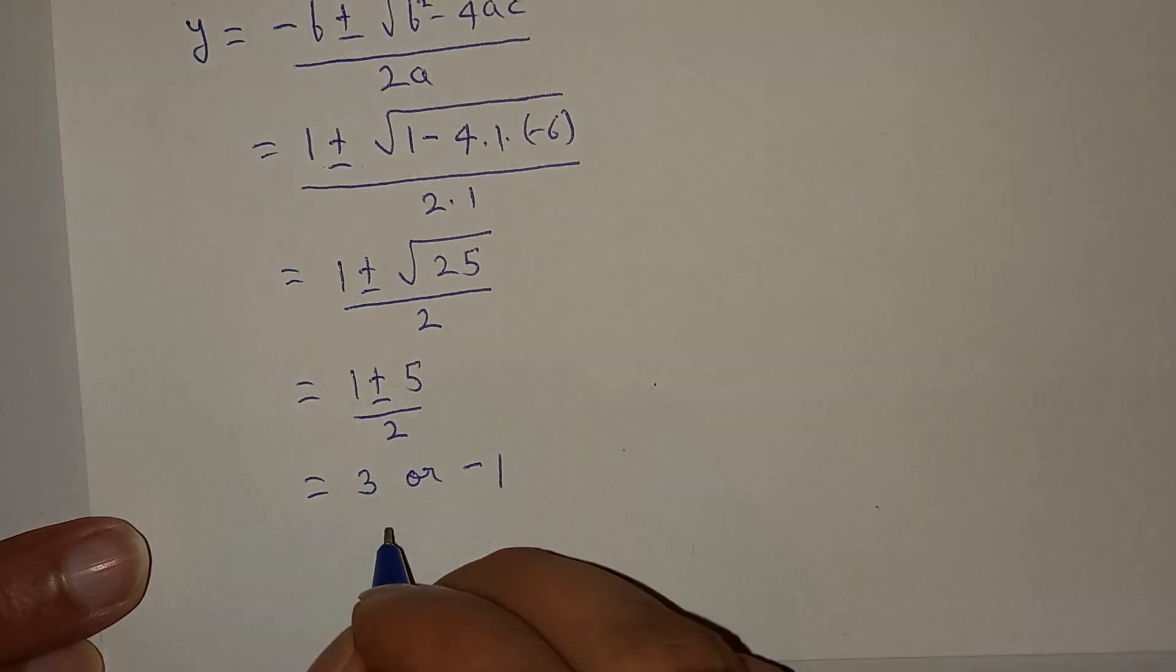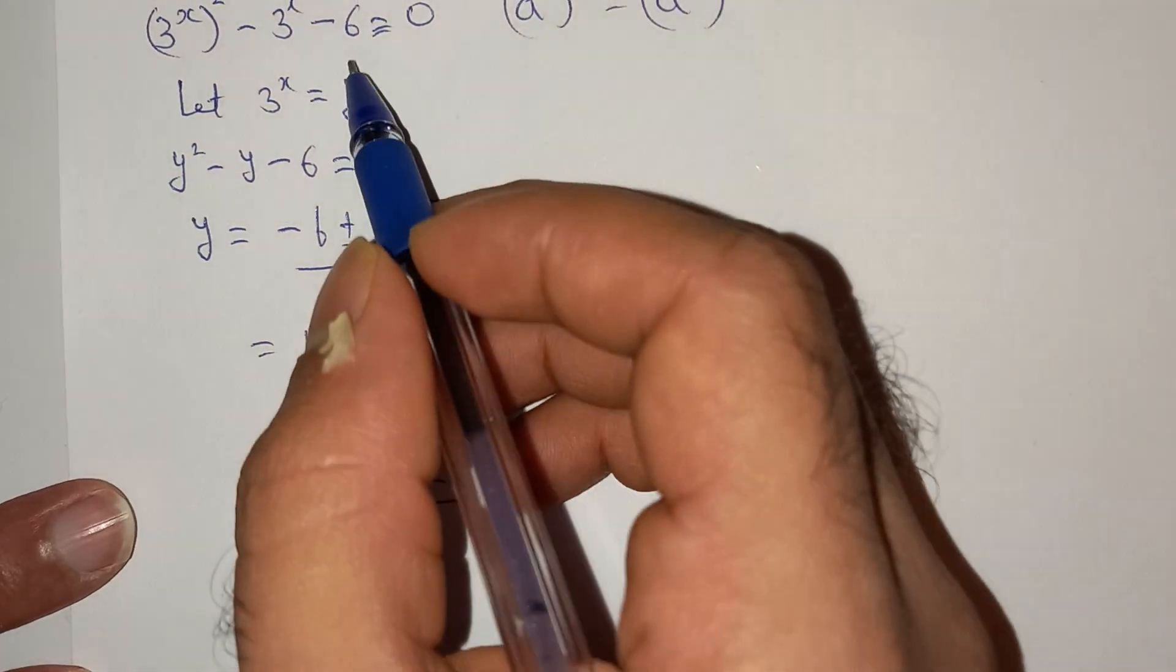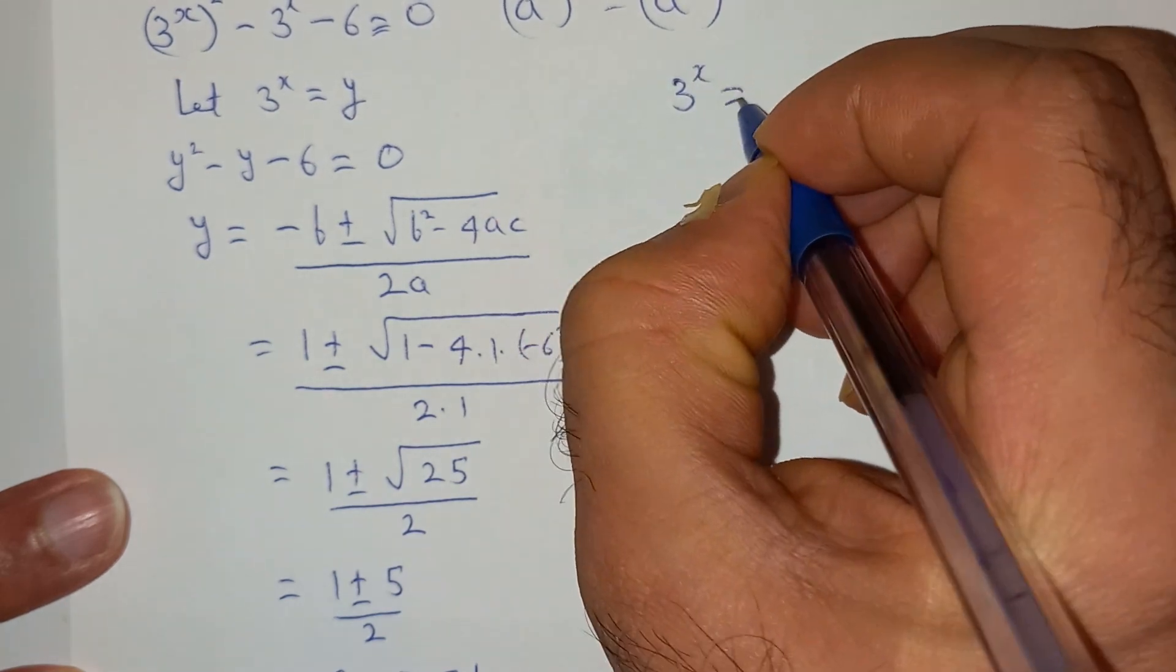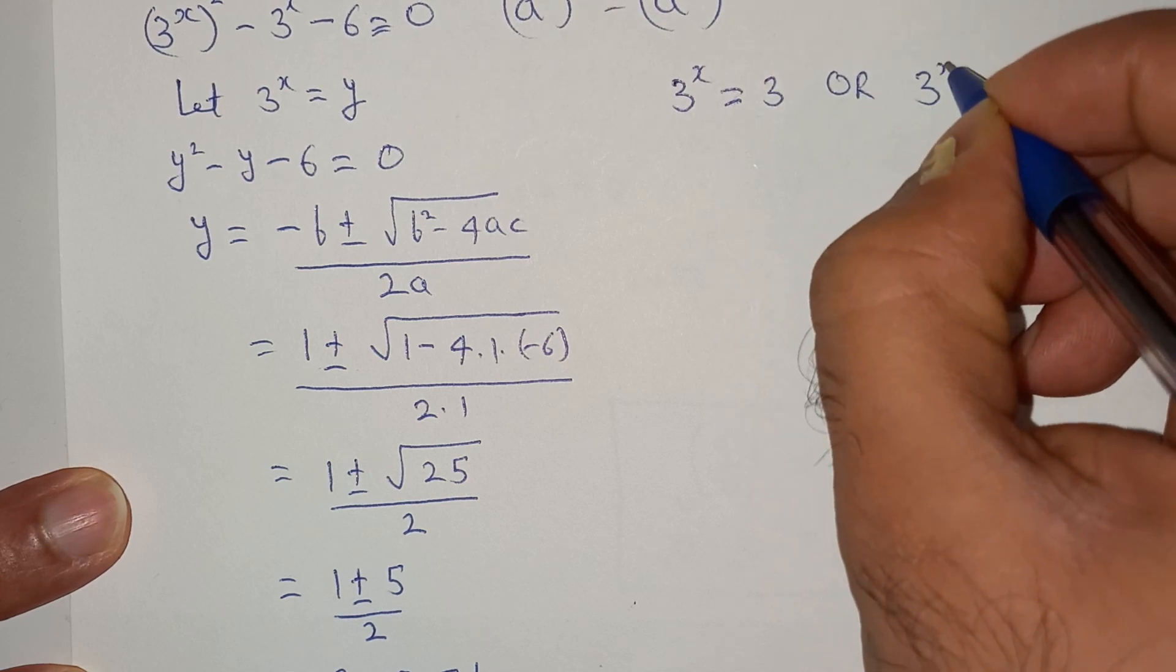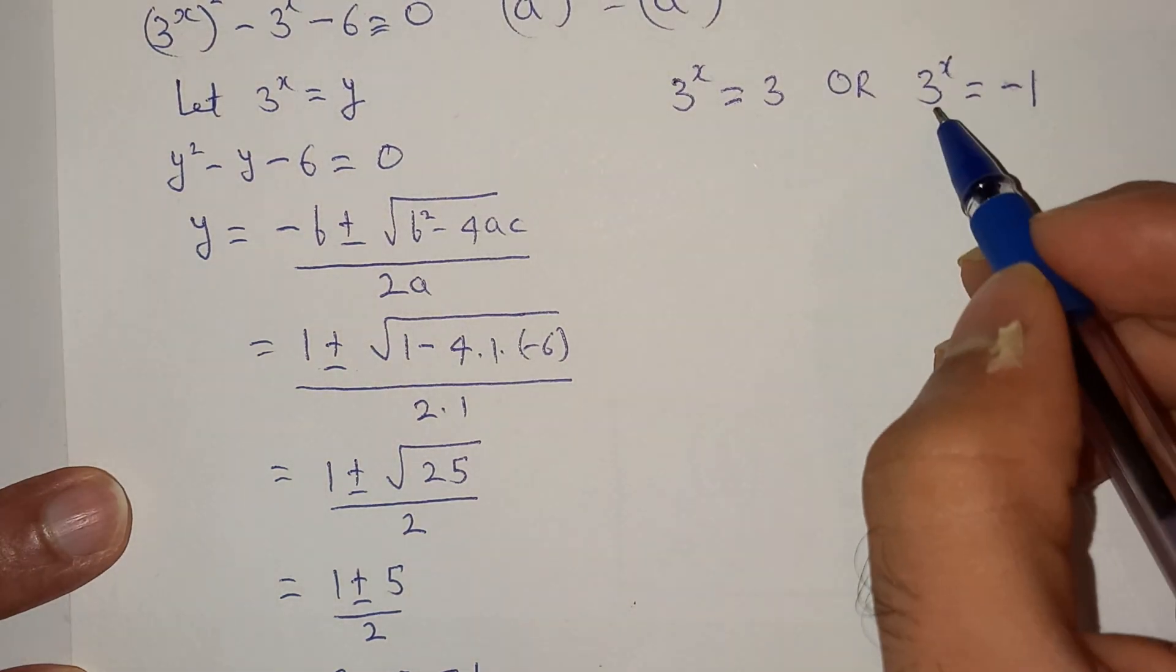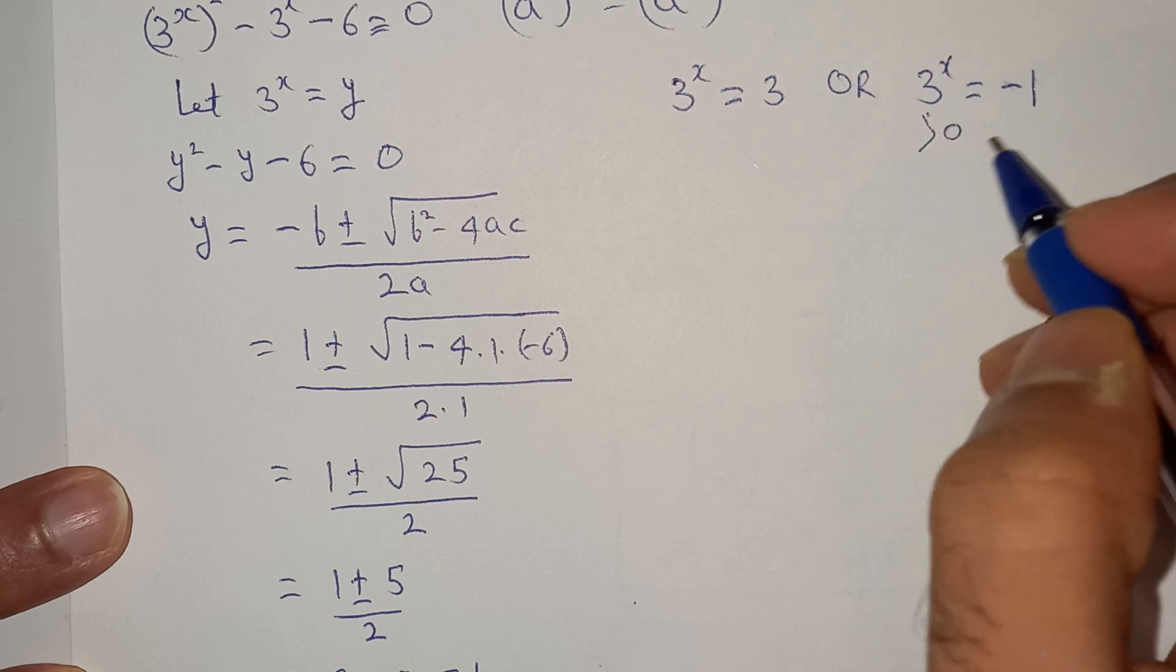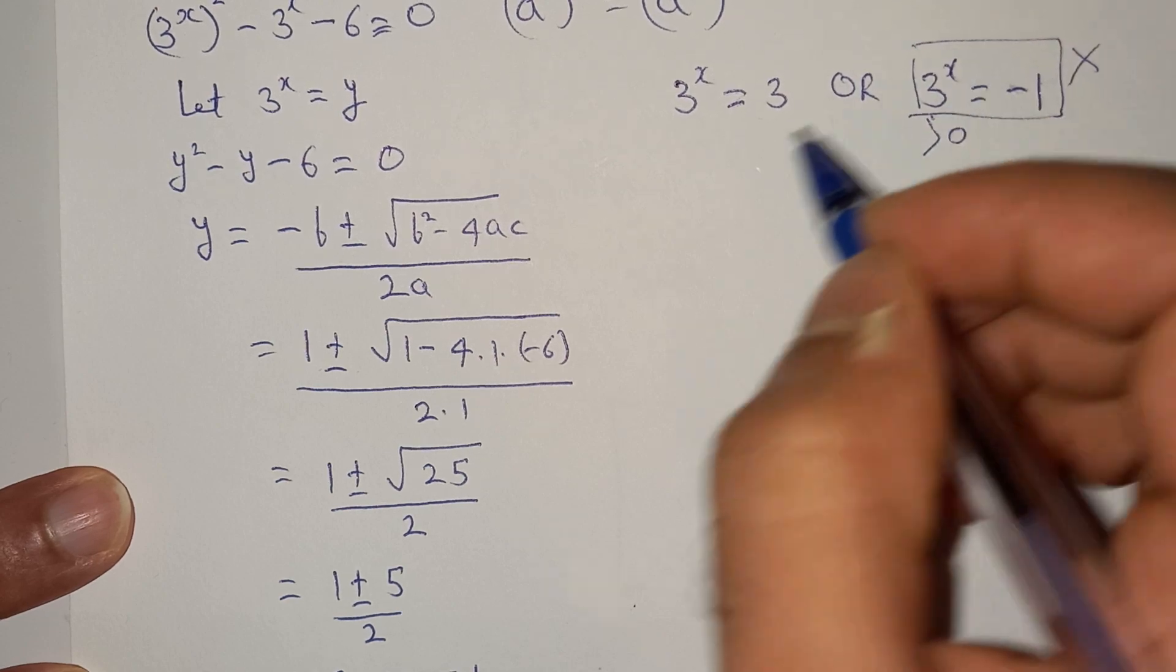But as you can see that we have assumed y as 3 power x, so we can write this as 3 power x equals to 3, or 3 power x equals to minus 1. So as you can see that 3 is a positive integer and any positive integer power x should always be positive, but here it's a negative number. So we can reject this solution.